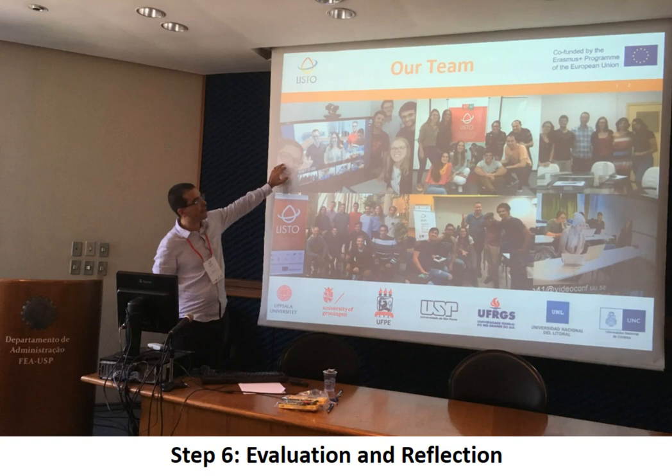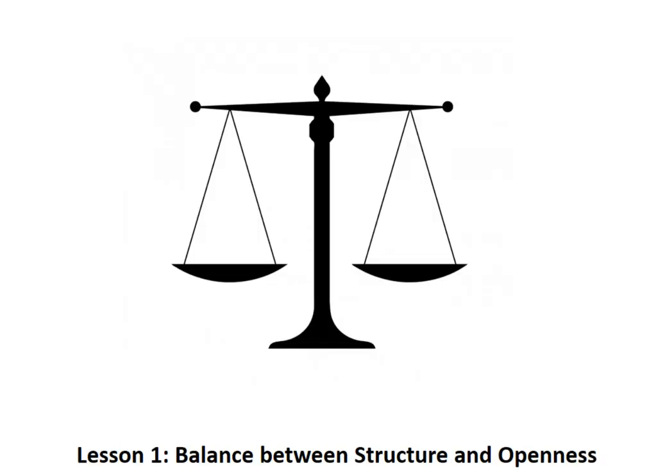Now I'm going to present the six lessons learned and recommendations from our collaboration. First, it's important to find a good balance between structure and openness. On the one hand, when you work with 10 universities in different time zones, you need a lot of planning and structure. At the same time, you want to allow for openness so that creativity, growth, and learning by doing can flourish.